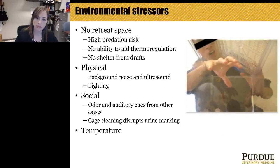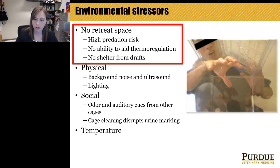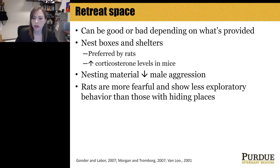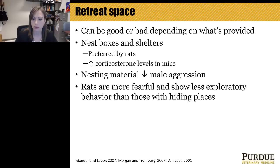Now let's examine each environmental stressor in more detail — this presentation is not exhaustive, just focused on some of the most important ones. Regarding retreat space, what's provided matters: nest boxes and shelters are preferred by rats but can increase stress hormone levels in mice. However, transfer of nesting material is the only intervention shown to reduce male aggression compared to a basic cage change. Rats without hiding spaces appear more fearful and show less exploratory behavior.